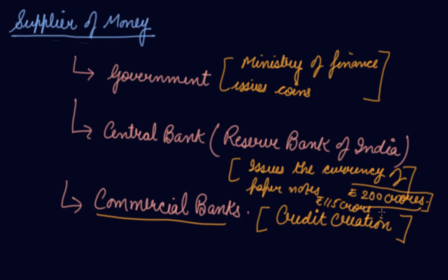Commercial banks create credit on the basis of demand deposits. When commercial banks provide credit to people or buy securities sold by the Reserve Bank of India, they act as suppliers of money. When they contract credit, there is a fall in the money supply. The expansion and contraction of money supply by commercial banks is governed by the monetary policy of the Reserve Bank of India, through which the RBI regulates credit creation and money supply in the country.